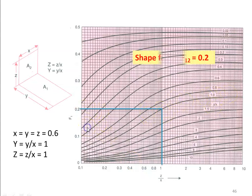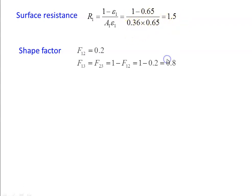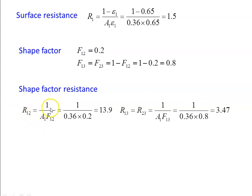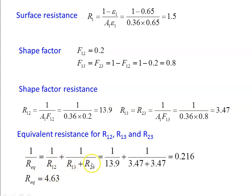From the shape factor chart, F12 equals 0.2. The surface resistance R1 equals (1 minus epsilon 1) divided by (A1 times epsilon 1) equals (1 minus 0.65) divided by (0.36 times 0.65) equals 1.5. F13 equals F23 equals 1 minus F12 equals 1 minus 0.2 equals 0.8. Shape factor resistance R12 equals 1 divided by (A1 times F12) equals 1 divided by (0.36 times 0.2) equals 13.9. R13 equals R23 equals 1 divided by (A1 times F13) equals 1 divided by (0.36 times 0.8) equals 3.47. The equivalent resistance: 1 over R_equivalent equals 1 over 13.9 plus 1 over (3.47 plus 3.47) equals 0.216, so R_equivalent equals 4.63.